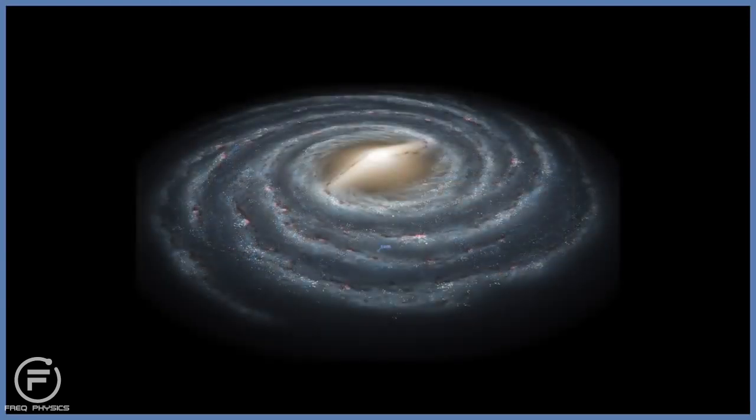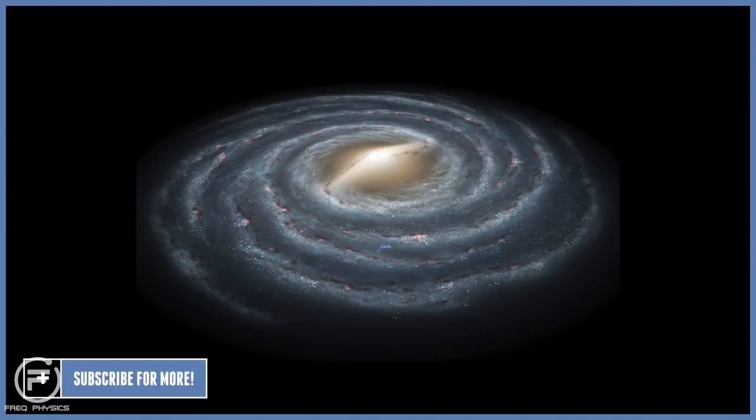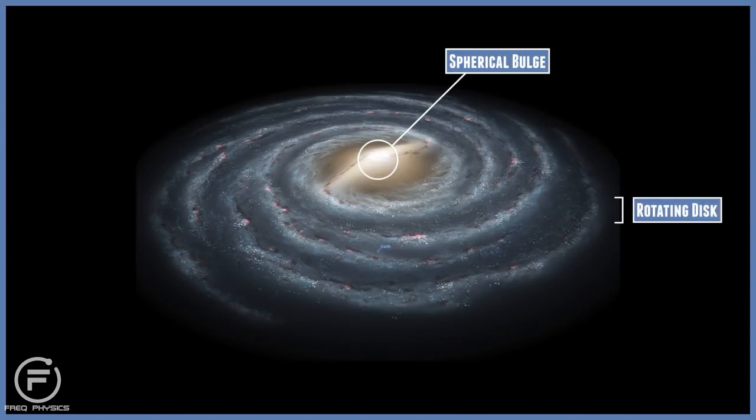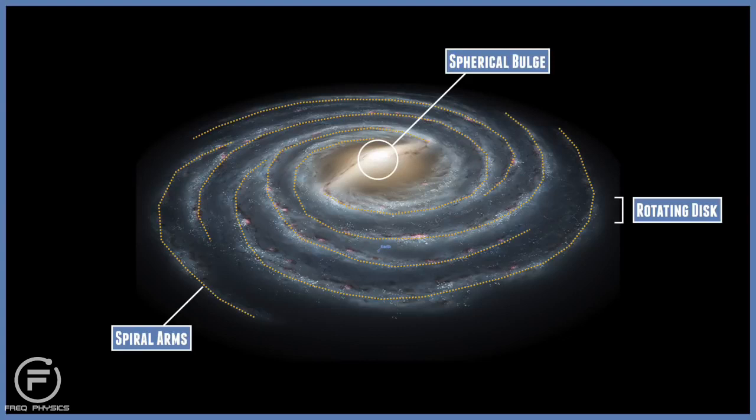About two thirds of all spiral galaxies have some kind of bar, and of course our Milky Way galaxy could as well be a barred spiral galaxy. Astronomers have seen a bar-like structure in the galactic center. Both regular and barred spiral galaxies are basically defined by a spherical bulge of stars at their center, and this is then surrounded by a thin rotating disc of stars that contain many spiral arms.